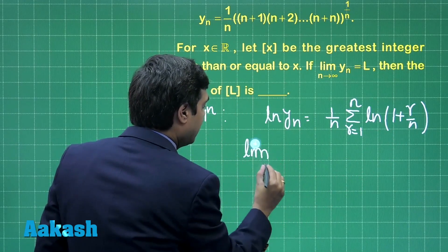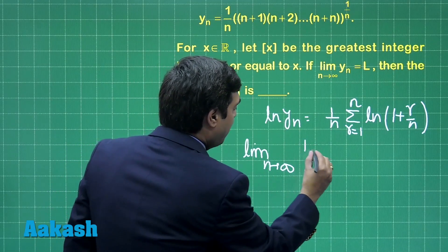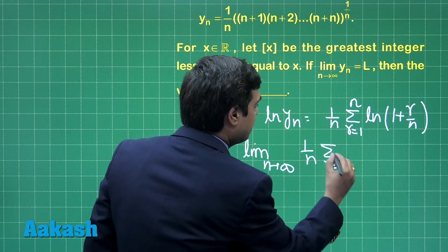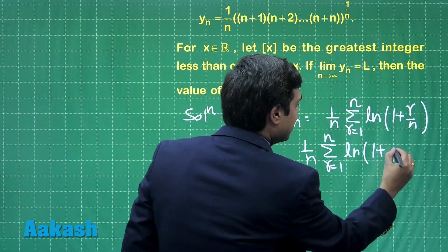Go with limit n approaching infinity, 1 by n summation r equals 1 to n, log 1 plus r by n.